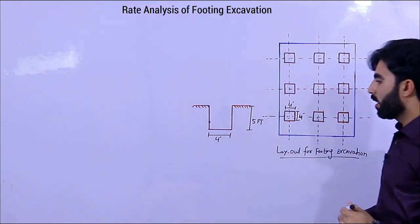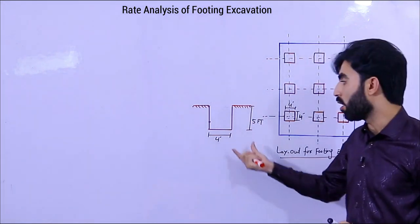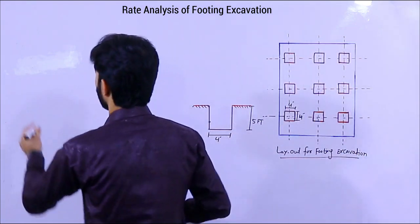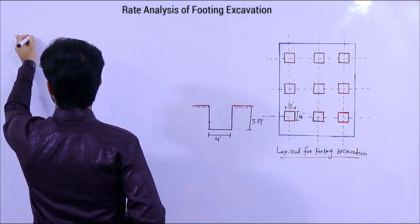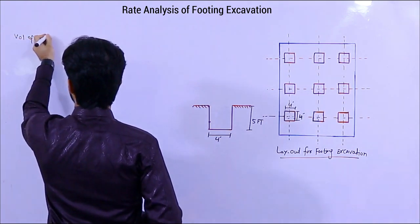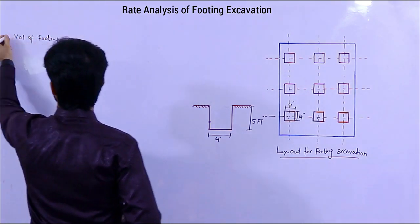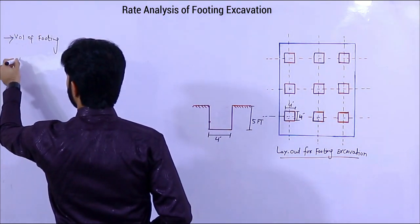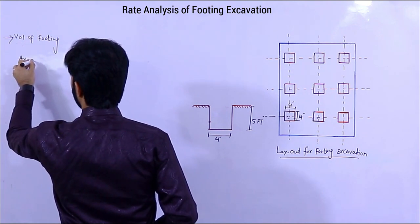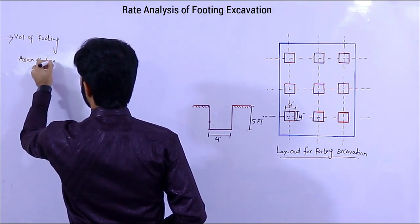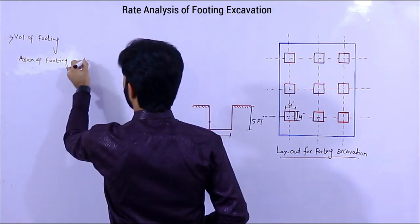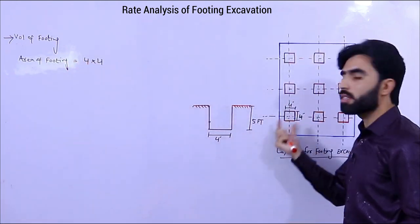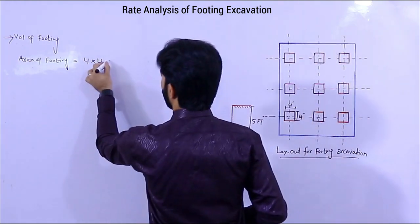First of all, I will find the volume of one footing. First I need the area. Area of each footing is 4 x 4. Because each footing size is 4 by 4 feet, the area is 16 square feet.